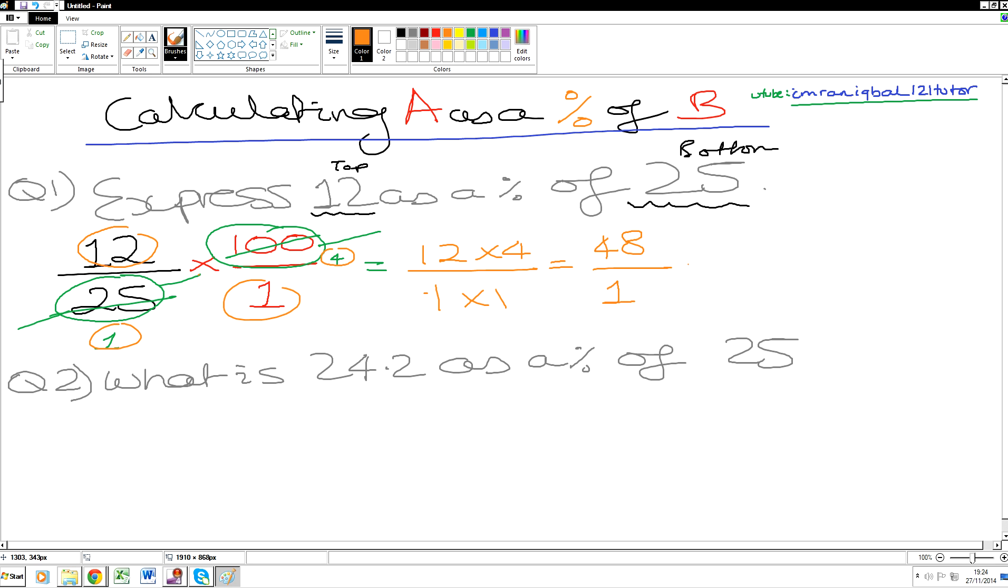So 12 times by 4 will give us 48. 1 times by 1 will give us 1, and 48 divided by 1 will give us a lovely answer of 48 percent. That's showing you nice, lovely, easy, chunky numbers that we can work with quite easily.